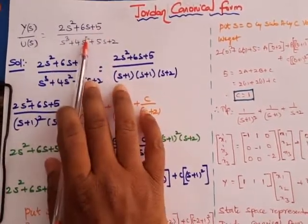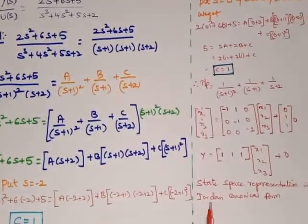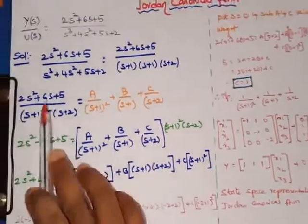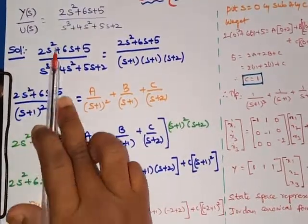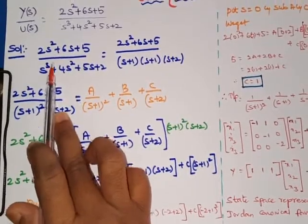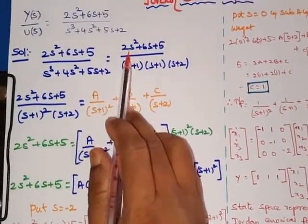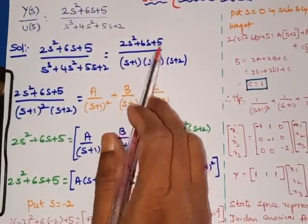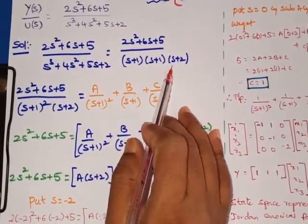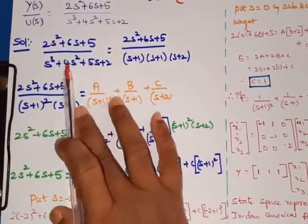For this transfer function we have to represent the Jordan canonical form and also its state space representation. The given transfer function (2s² + 6s + 5) / (s³ + 4s² + 5s + 2) can be written as (2s² + 6s + 5) divided by (s+1)(s+1)(s+2). If you multiply all three terms you will get the same denominator.